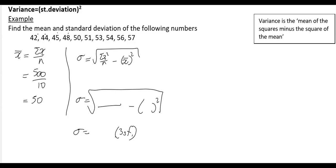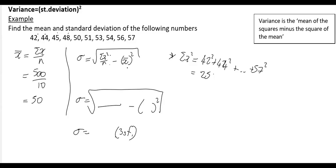For the standard deviation, the formula is the square root of (Σx²/n − x̄²). I'll work out Σx² over here. This means every x value squared and then added up: 42² + 44² + 45² + ... + 57². If you calculate all of those and sum them, you get 25,240. I'm showing this working out here, but normally I'd just do this on the calculator.